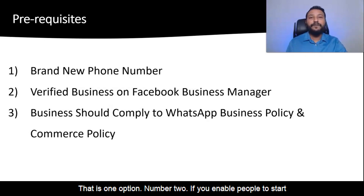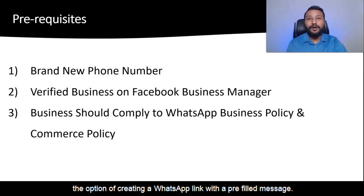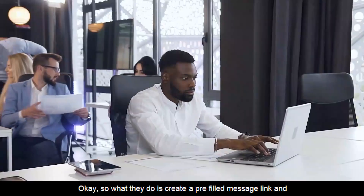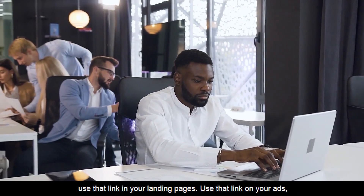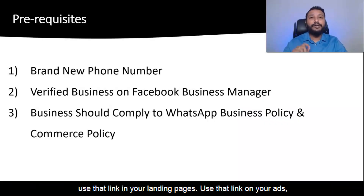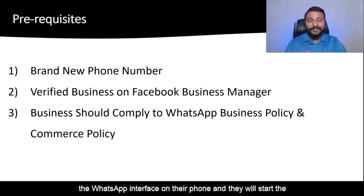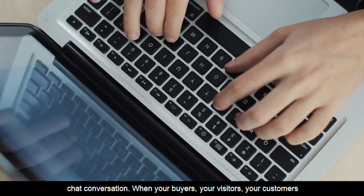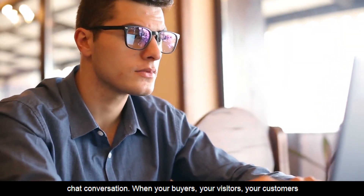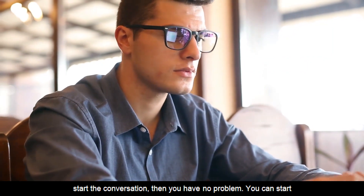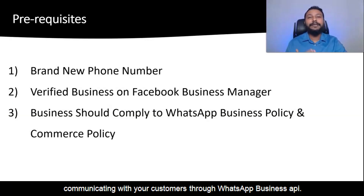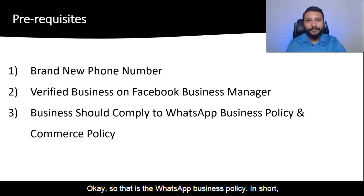Number two, if you enable people to start the conversation with your business. For example, you have the option of creating a WhatsApp link with a pre-filled message. Create a pre-filled message link and use that link in your landing pages and on your ads. When people click on your ads or landing pages, they open the WhatsApp interface on their phone and start the chat conversation. When your customers start the conversation, then you have no problem — you can start communicating through WhatsApp Business API. That is the WhatsApp Business Policy in short.